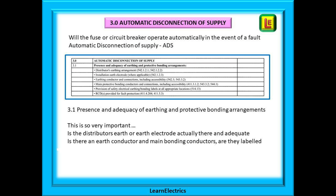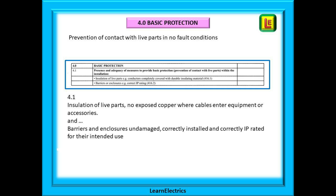Section 3 is to do with automatic disconnection of supply, sometimes abbreviated to ADS. If a fault occurs on the circuit, we want the fuse or breaker to sense this fault and automatically trip and disconnect the supply. Once disconnected, the circuit should stay disconnected until the problem is corrected and the breaker is manually reset, or the fuse replaced — the breaker should not reset itself. You will be checking that there is an earth so that fault currents can flow to earth, that main bonding to metallic gas and water pipes is in place, labels are fitted, and whether RCDs are required.